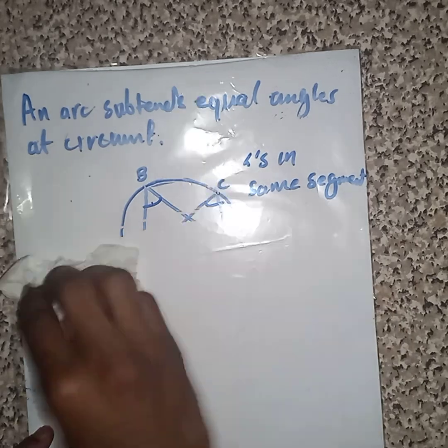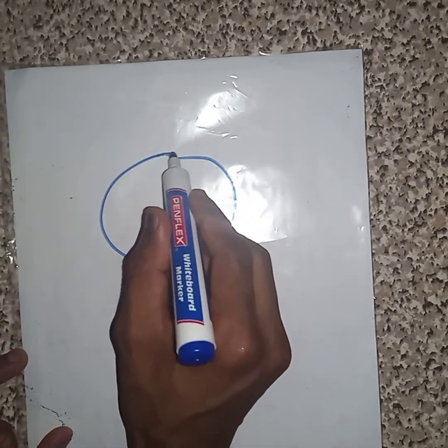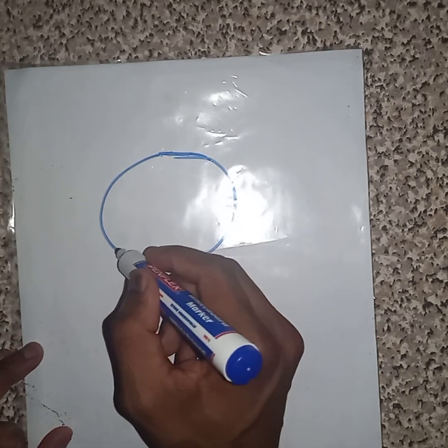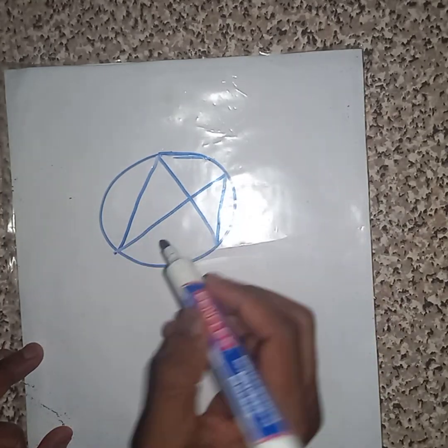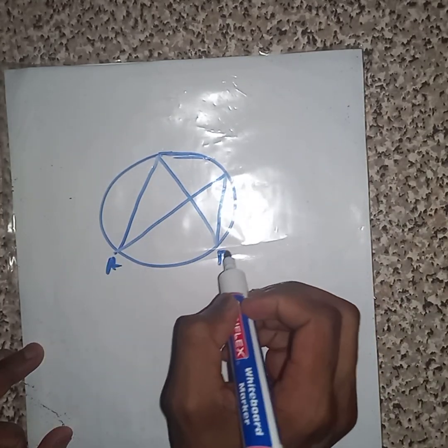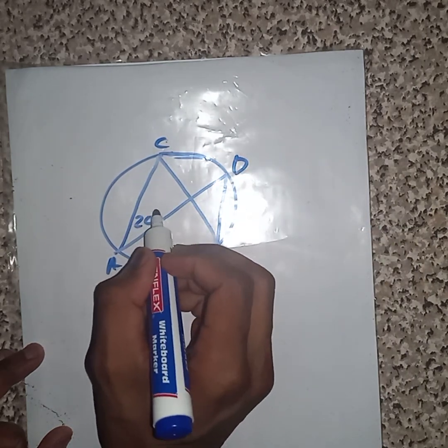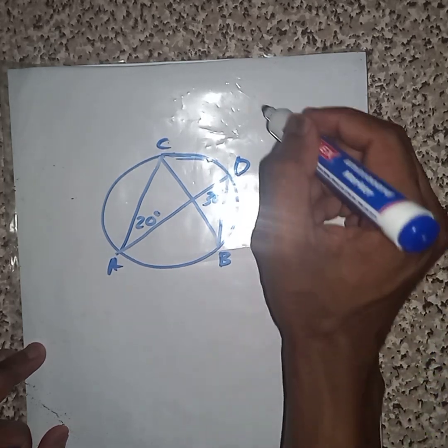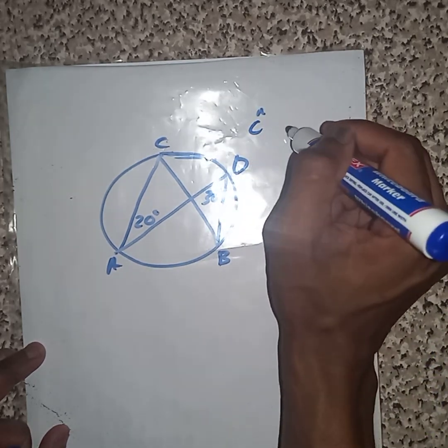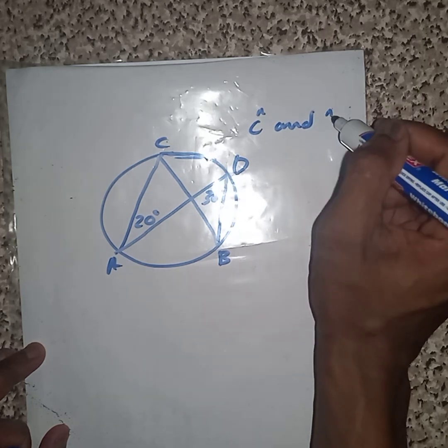If let's say I have maybe a diagram like this, we have A, D, C, B. Then I give you 20, then I give you 80, then I ask you to find angle C as well as angle B.